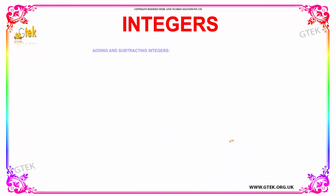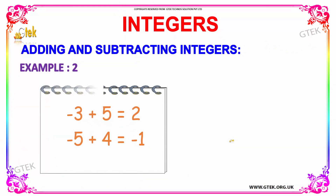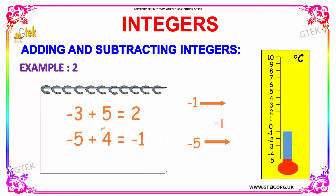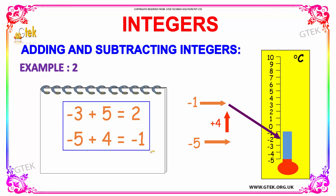Let us see our next example. Minus three plus five gives you two. Now, minus five plus four is equal to minus one. So we have minus five, to which you have to add four — one, two, three, and four. So this will be your result, which is minus one.